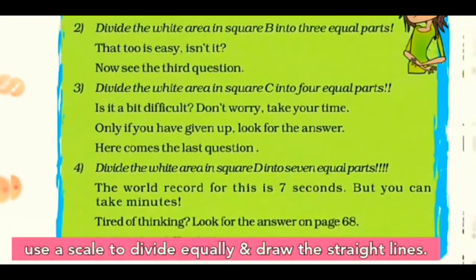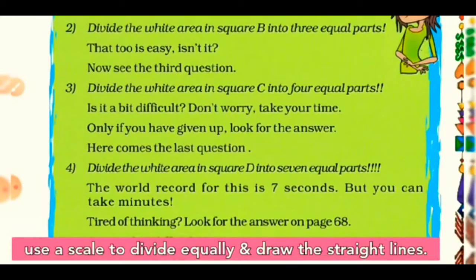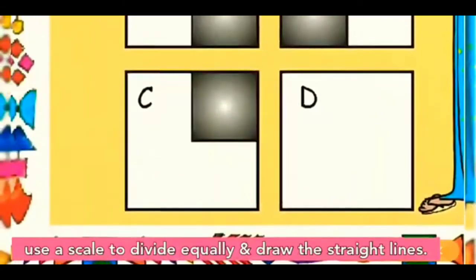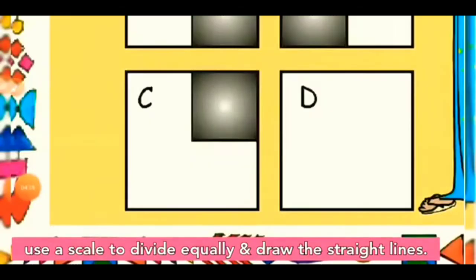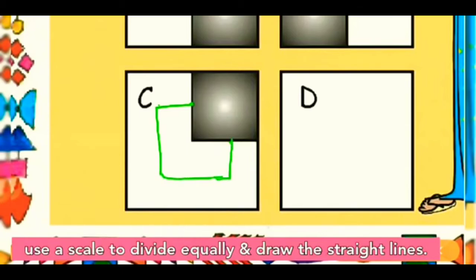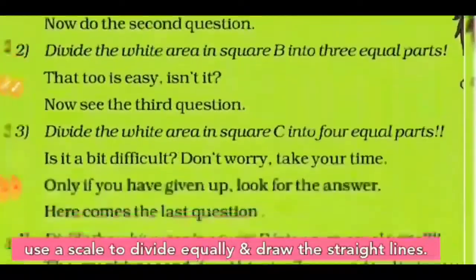The third question: divide the white area in square C into four equal parts — a bit more difficult. First, find the middle dot points, then match those dot points by drawing lines. Draw the division lines accordingly. You get one, two, three, and four equal parts, each being one-fourth of the other. Great job, dear students!